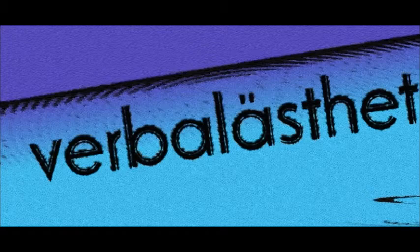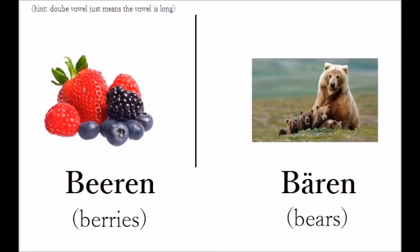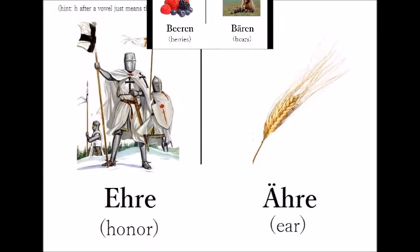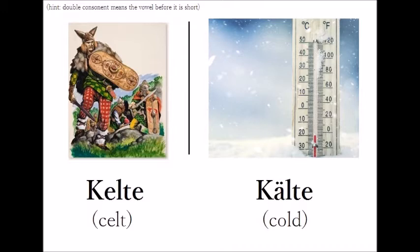E versus Ä. As said in the pronunciation tutorial, the short version of E and Ä is the same sound: Ä. So these two words sound the same: Kälte.